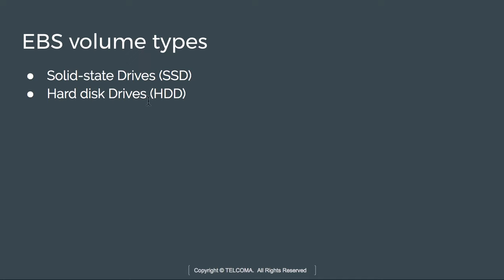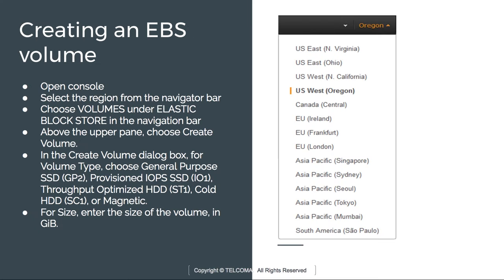So we have two types of volume types: solid state drives and hard disk drives. Now let's discuss how to create an EBS volume. First, we need to open the AWS Management Console and log in. Then we check the region where we want to create the volume, and choose Elastic Block Store from the menu.